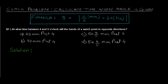The formula is: theta (the angle) is equal to the mod of (11/2 × minutes − 30 × hours). This mod sign is just to eliminate any negative values, because we are not going to have negative angles. So let's start with the first question.